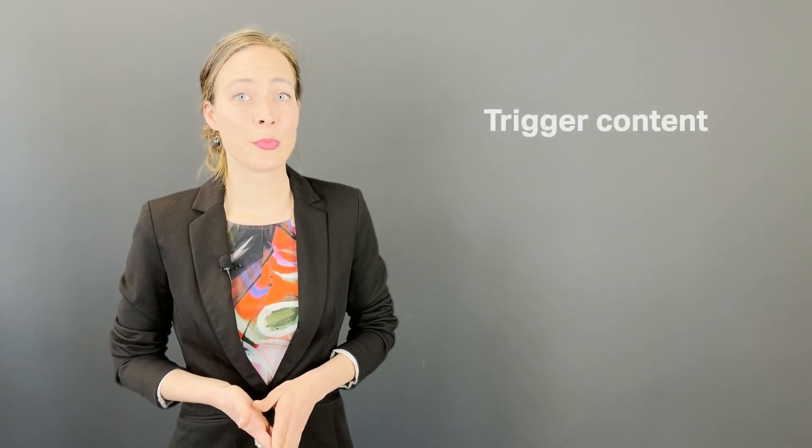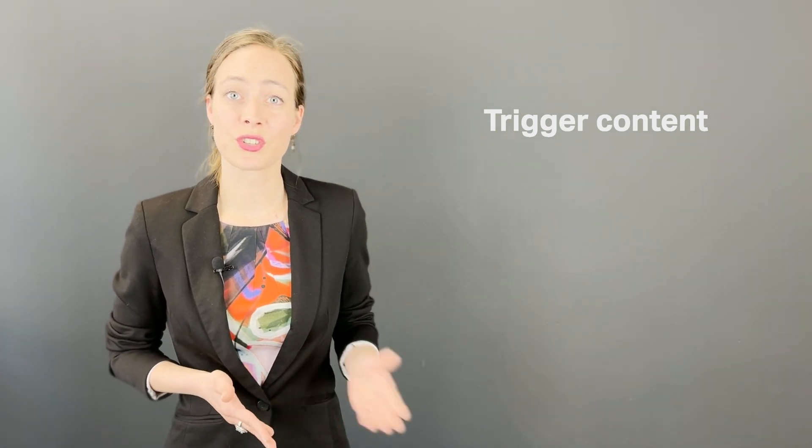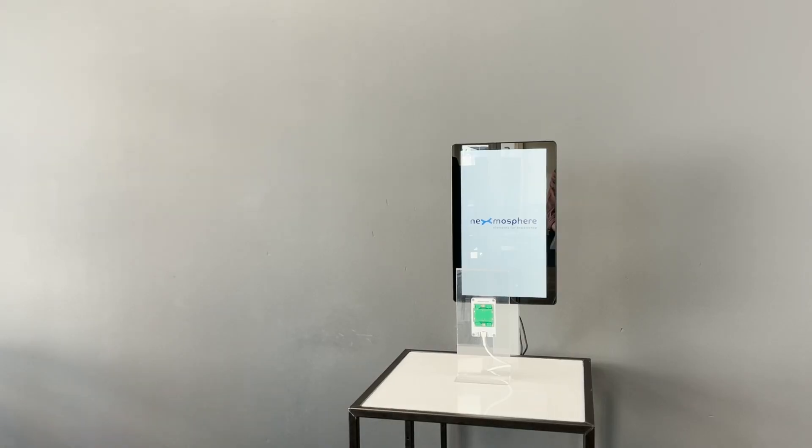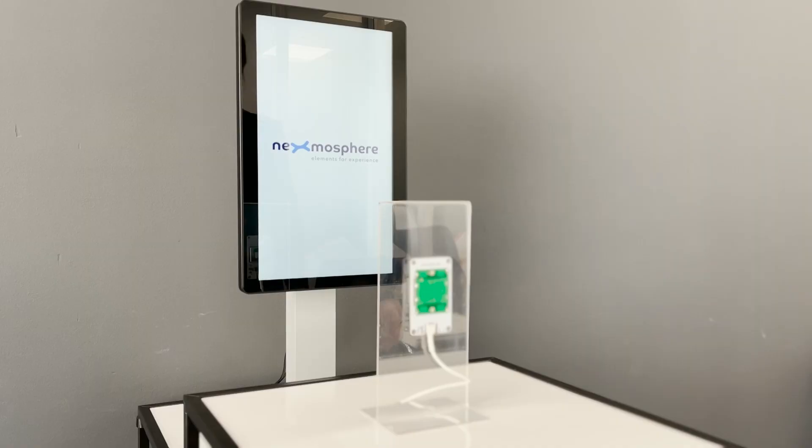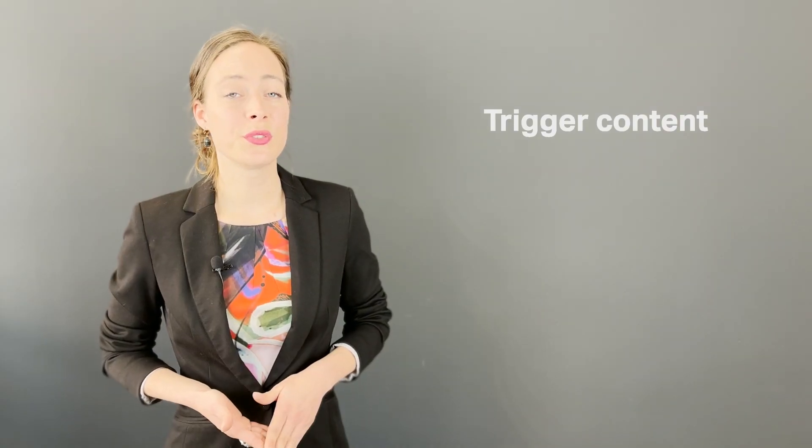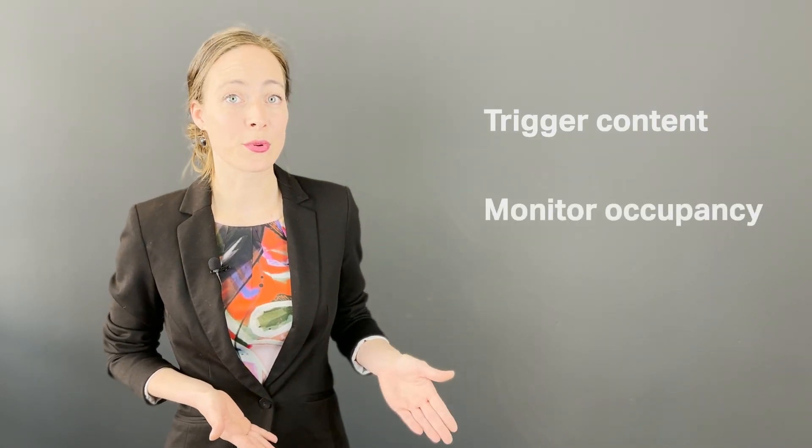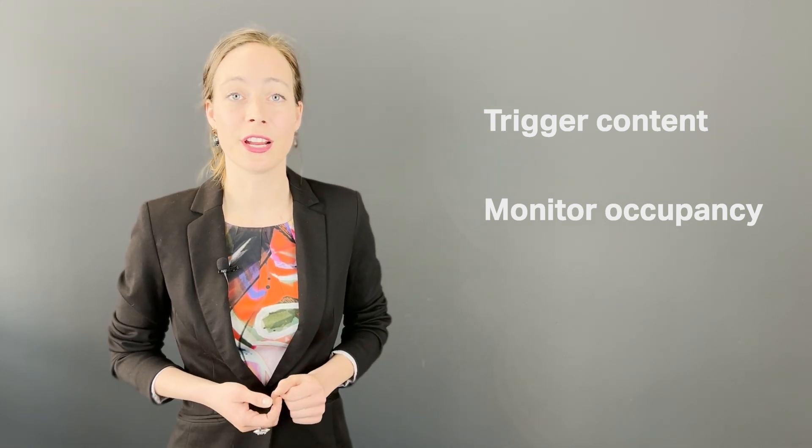Typically, the sensor input is used to start content on a screen or video wall as soon as a person enters an area or approaches a display. However, it can also be used for monitoring purposes, for example, to check if a meeting room is occupied or not.